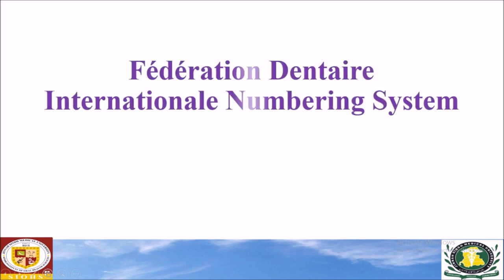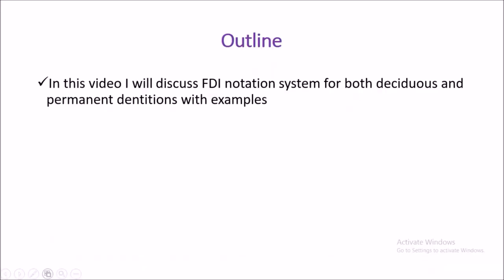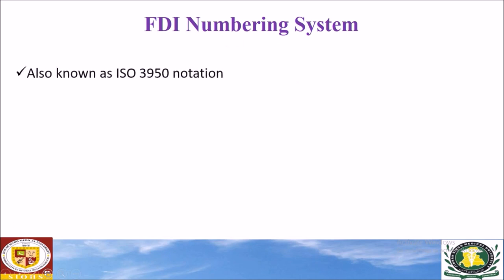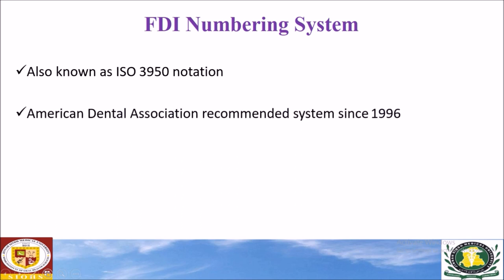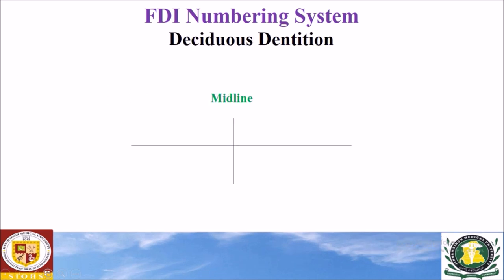In this video I'll talk about the Federation Dentaire Internationale numbering system, also referred to as the FDI notation system. I'll discuss the FDI notation system for both the deciduous and the permanent dentitions with examples. The FDI notation system is also referred to as ISO 3950 notation. The American Dental Association recommends this notation system since 1996, and it is adopted by the World Health Organization and International Association for Dental Research.